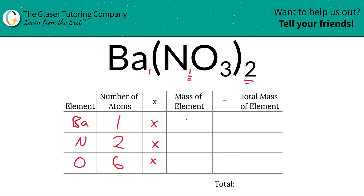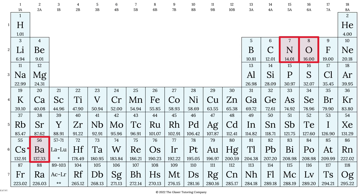Simply then take those values — the number of atoms — and multiply by the mass of each element. That's where the periodic table comes into play. Barium has a mass of about 137.33, nitrogen is about 14, and oxygen is 16. These values represent grams per mole if you're doing molar mass, or AMU if you're doing molecular mass. Even though they mean two very different mass values, they do have the same numeric value.